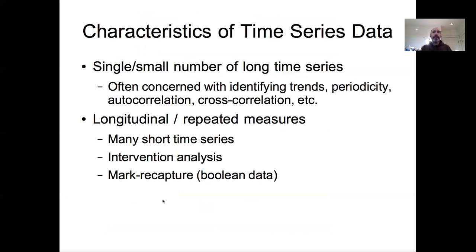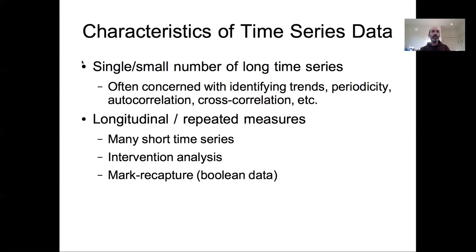Thinking about characteristics of time series data, we'll often deal with two different modes reflecting two different classes of models. What most people traditionally think of as time series analysis involves the analysis of a single or small number of long time series. You have one time series over time and you're often trying to figure out if there are trends, periodicity, autocorrelation, or cross-correlations between an X time series and a Y time series.